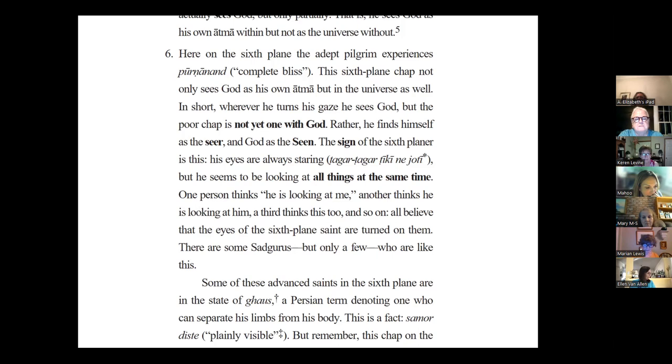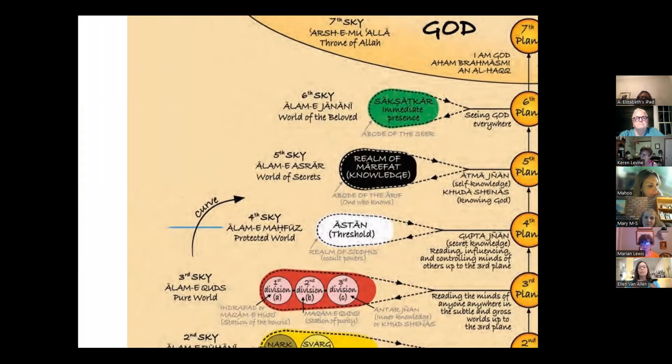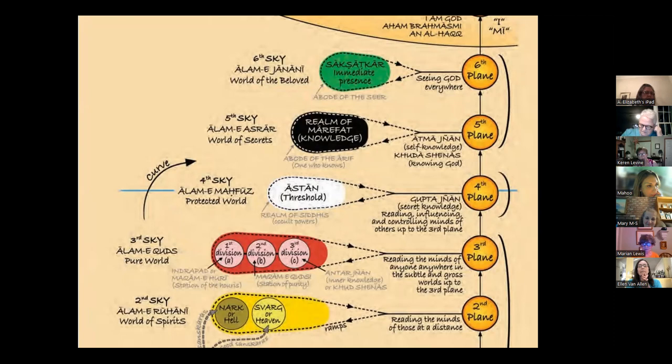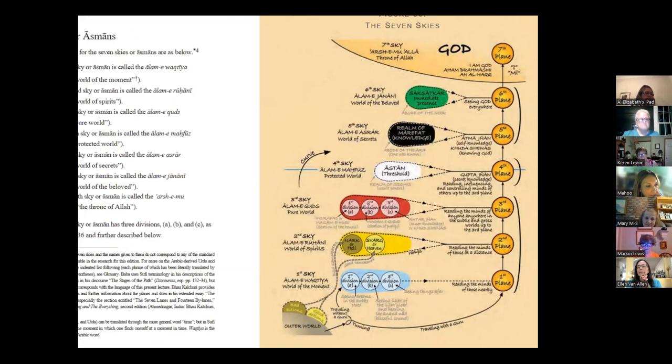I think that's what Mahu was asking. It does sound like that. In short, whenever he turns his gaze he sees God, but the poor chap is not yet one with God. Rather, he finds himself as the seer, meaning he's one person and God is the scene. God is still the objective. So it's like subject to object still, still dual, not unitary. That's been, Baba has always characterized the sixth plane that way. Earlier on he used the term shut car in that chart that he had. That's also explained at the end of God speaks when they're talking about Takiat, I think it is. The unitary state of God and all the different stages and who is where.